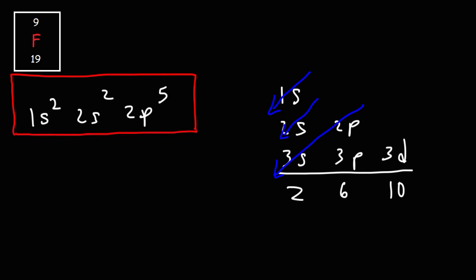Our goal is to write the noble gas notation of fluorine, so we need to be familiar with the noble gases. You can find these on the right side of the periodic table. Helium has an atomic number of 2. Next is neon, which has an atomic number of 10.